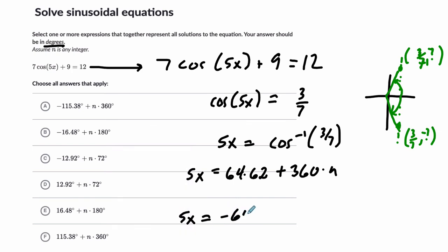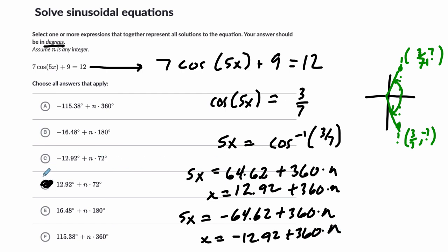So here we'll have 5x equals negative 64.2 plus 360 n. And then we divide both sides by 5 in both cases, and we'll have the problem solved. In this case you get 12.92 plus 360 times n, and negative 12.92 plus 360 times n. I'm wrong, not 360. You divide everything by 5, that's 72. Oops, crossed the wrong thing out. 72 and 72.